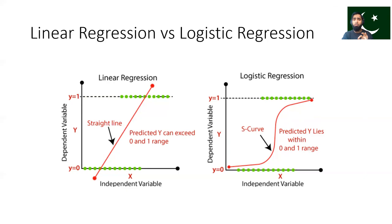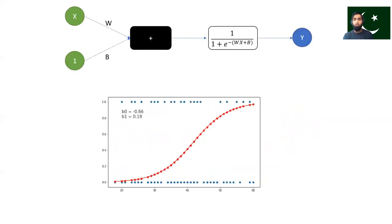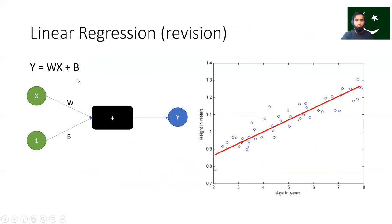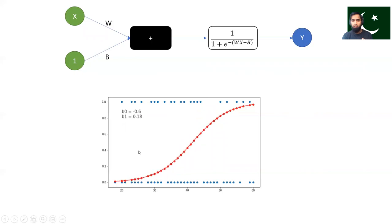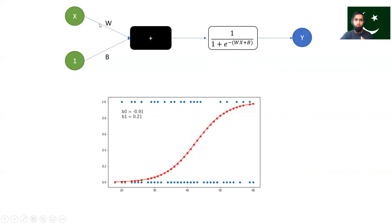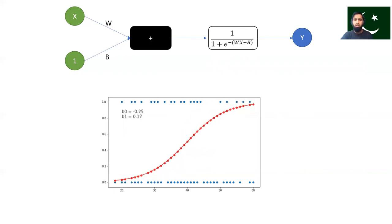I want to tell you that logistic regression is not the only algorithm — there are many others — but I am focusing on logistic regression because my goal is to lead into artificial neural networks. The difference between linear and logistic regression models is just one additional block: the sigmoid function. The input is still wx plus b, but the output is passed through the sigmoid function, which ensures the output y is between 0 and 1. The output gives you a probability — if it is close to 1, we predict 1; if close to 0, we predict 0.